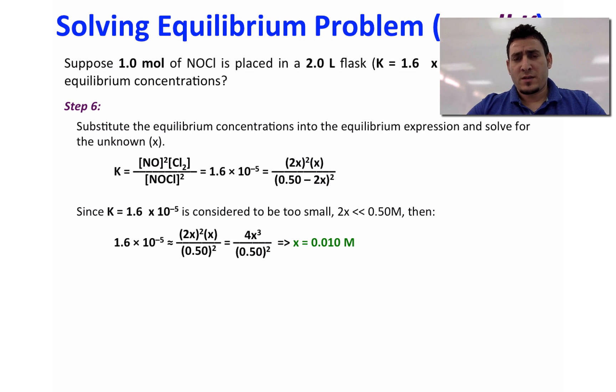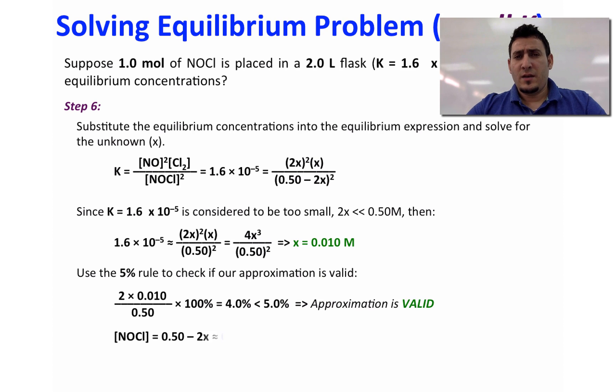Now to verify our assumption if it's correct or not, you will divide X by the initial concentration of NOCl, and if we find it less than five percent this means that our approximation is valid. So in this case it's 4.0 percent.